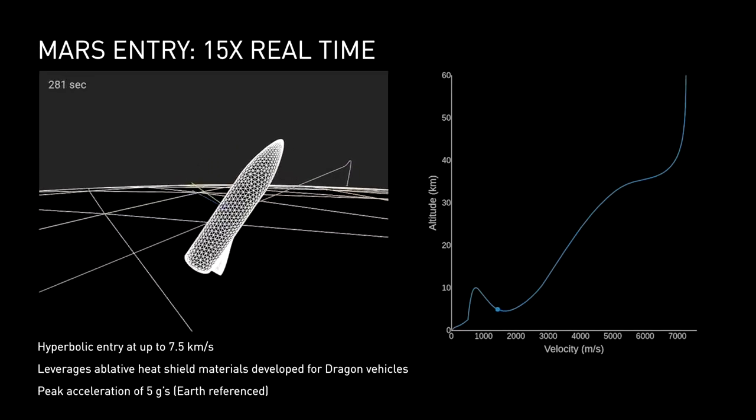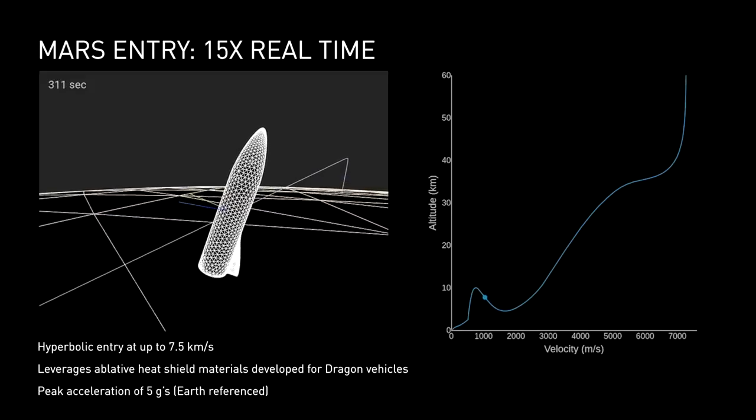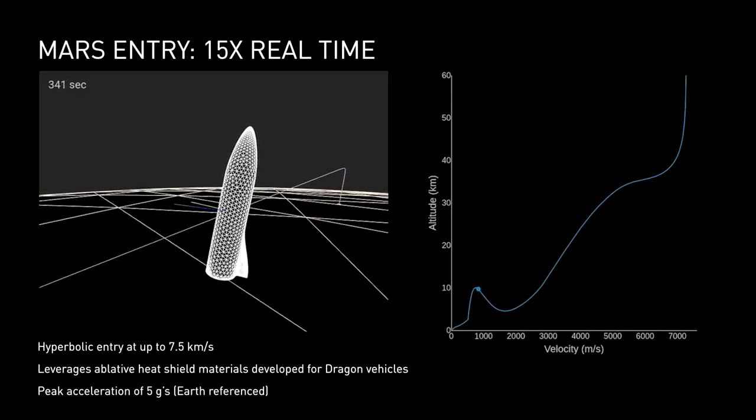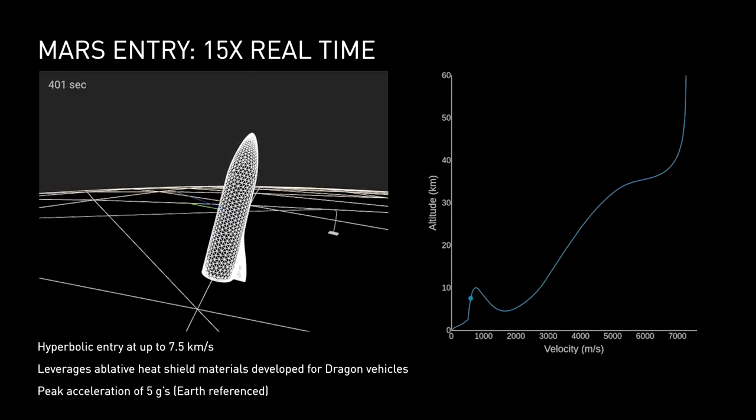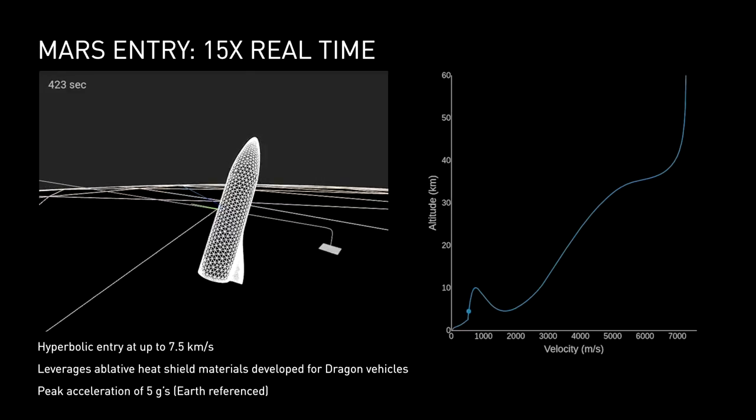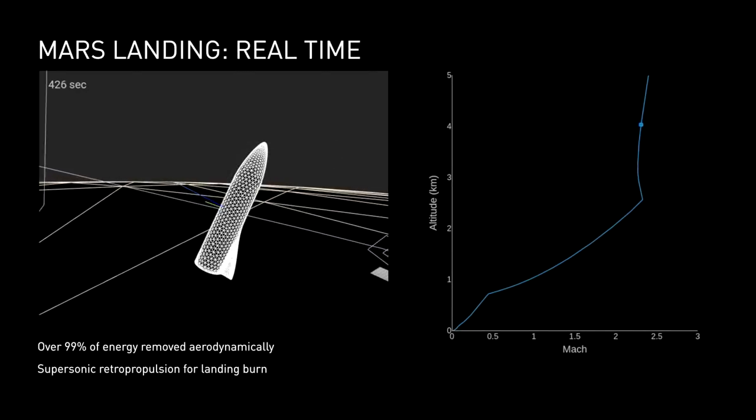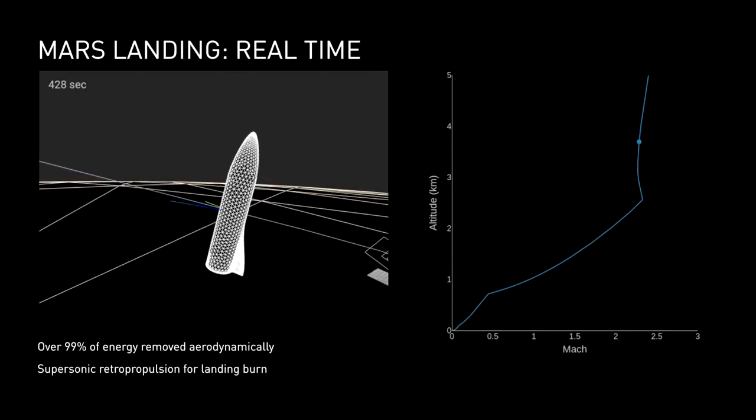For Mars, there will be some ablation of the heat shield. So it's just like a brake pad wearing away. It is a multi-use heat shield, but unlike for Earth operations, it's coming in hot enough that you will see some wear of the heat shield.